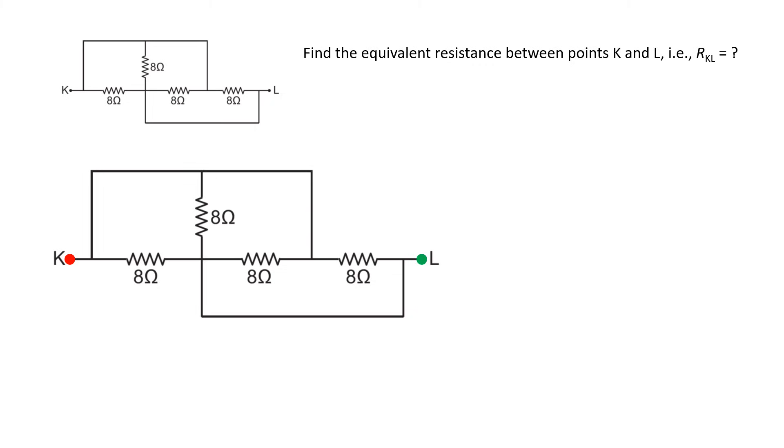Let's denote point K by red color and point L by green color. So you see that this point, this point, this point are all equal, and because there is no resistors in between, all these junctions are equivalent, which also means these points are equivalent to point K.